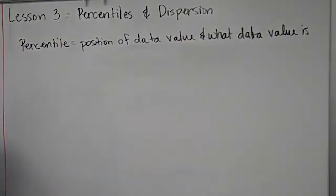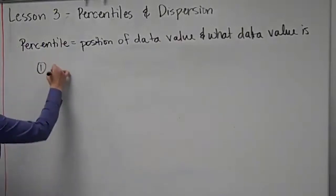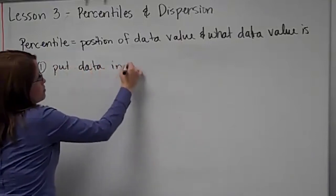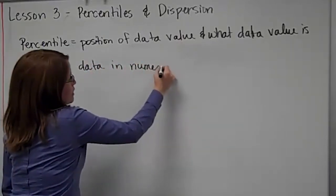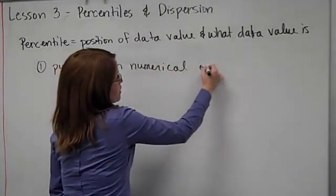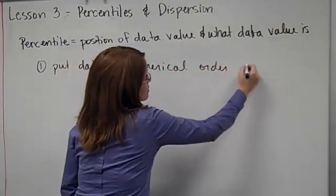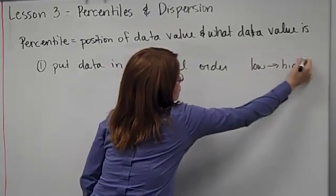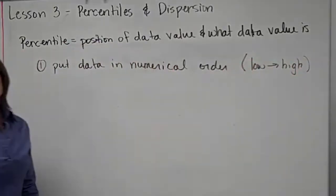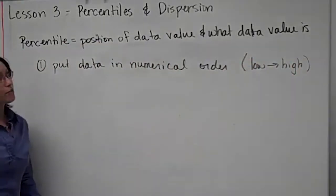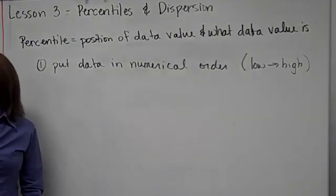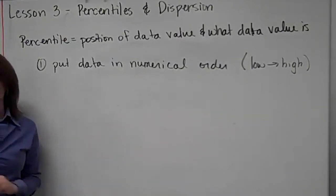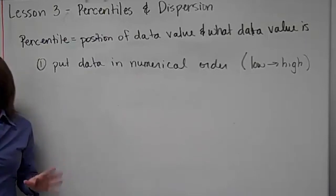You'll be able to tell me where to find it, and you'll also be able to tell me what the actual value is. Just like when we did the median, we have to put our data in numerical order. You're going to do this from lowest to highest. Just like median, you cannot get the correct answer unless you put the data in order.